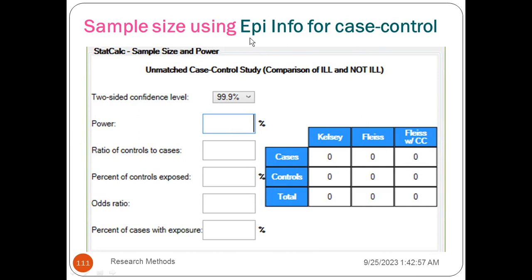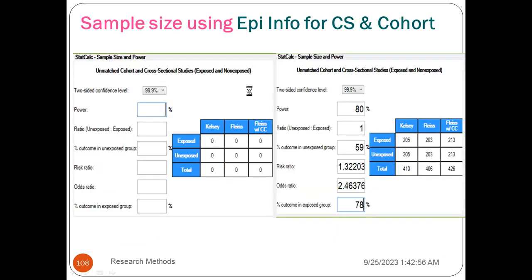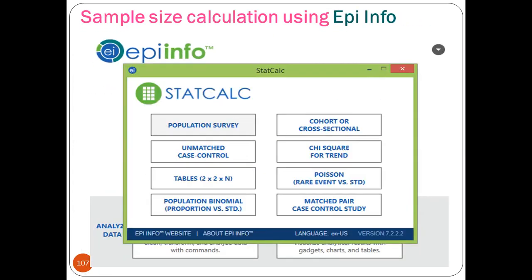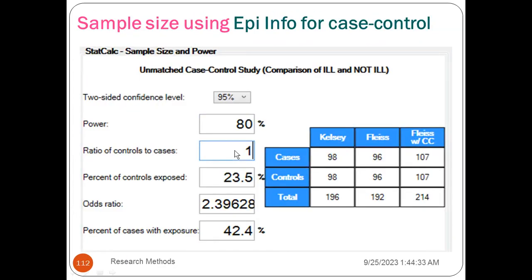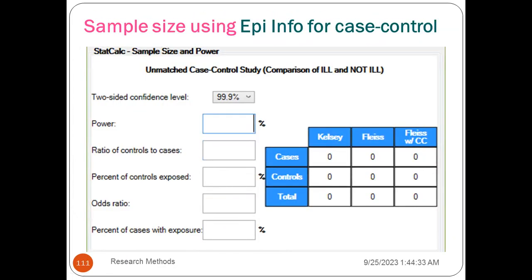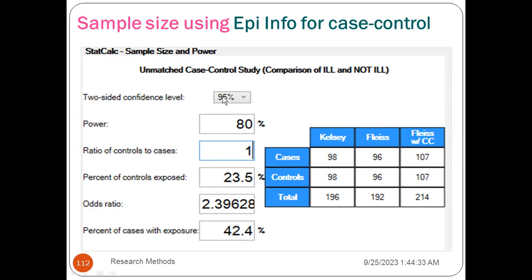For case control, you can use the case control. You can use the case control size. You can save the cross-sectional code and use the right foundation, or use the same program. If you use the same case control, you can use the second one. You should use the margin of the range control size and the ratio control size.